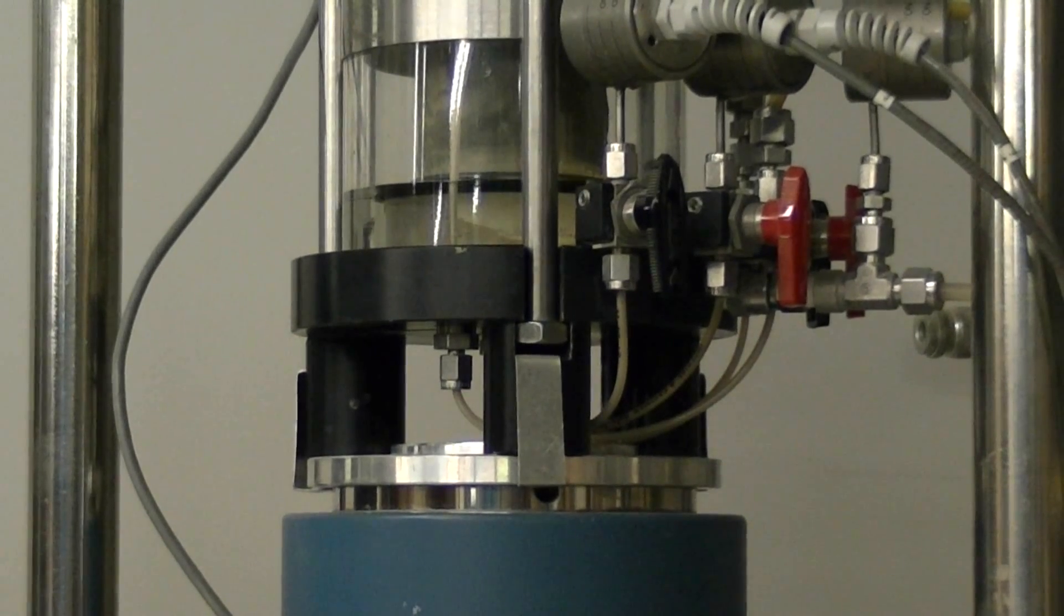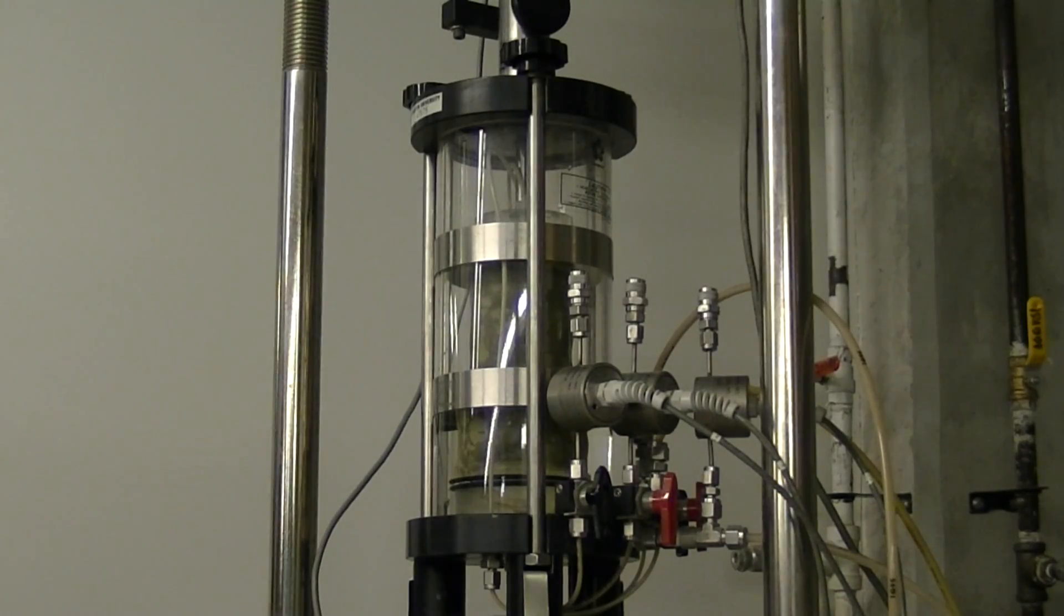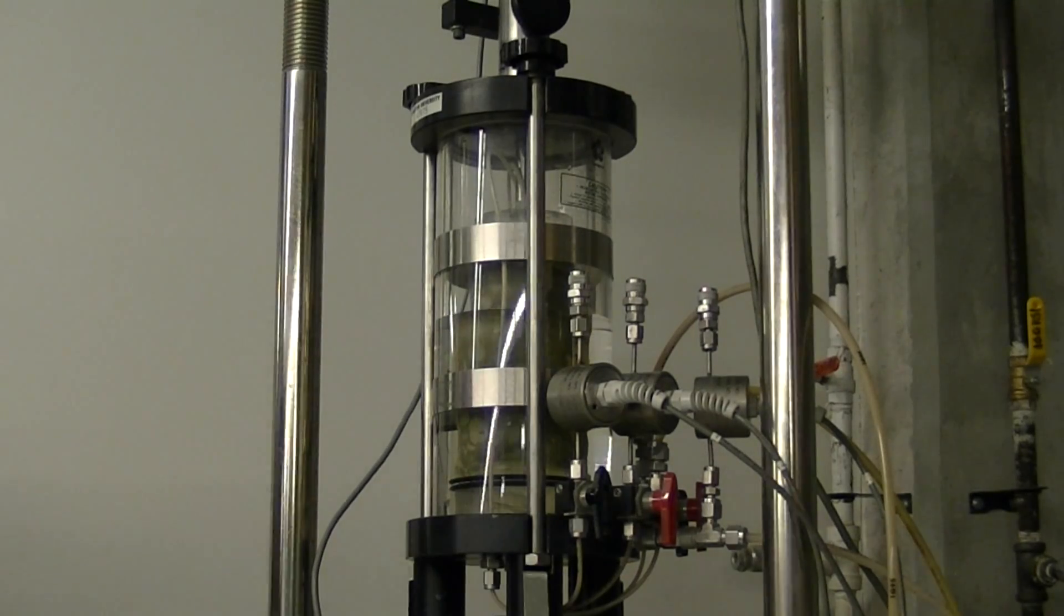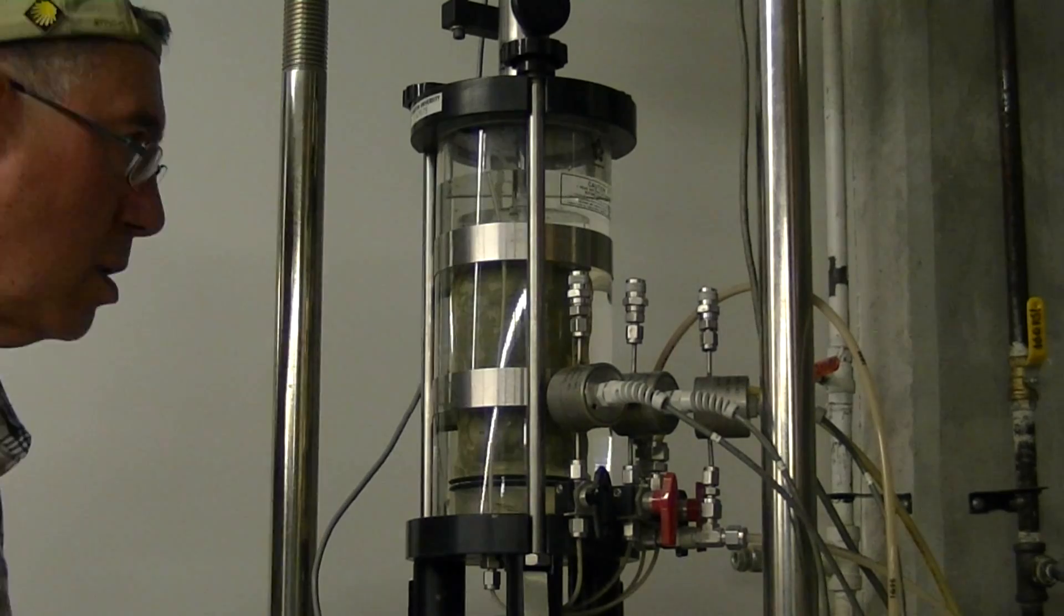We're now filling the space between the outside casing and the sample with water. As we do this, air is escaping through the valve at the top.